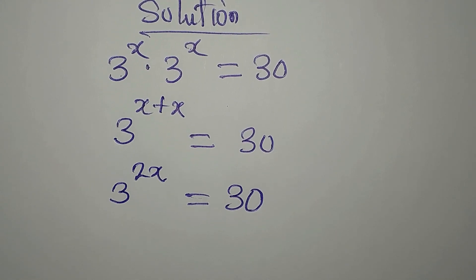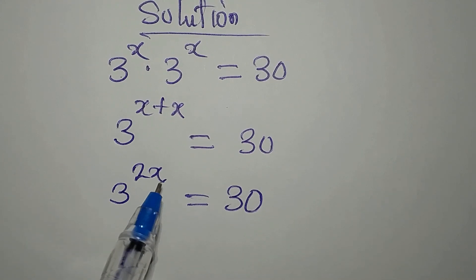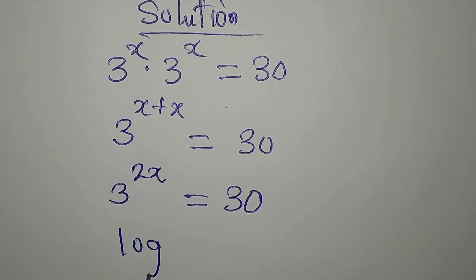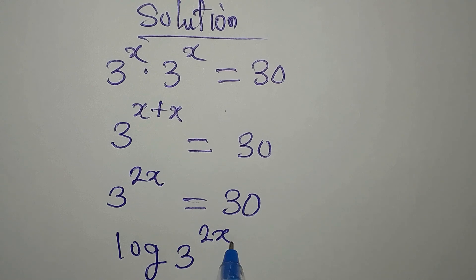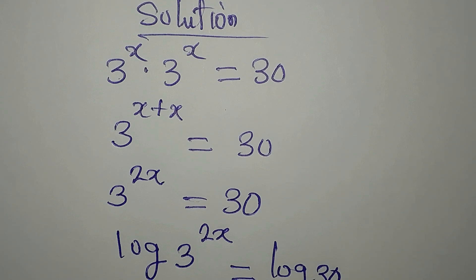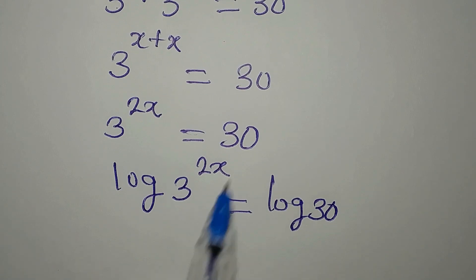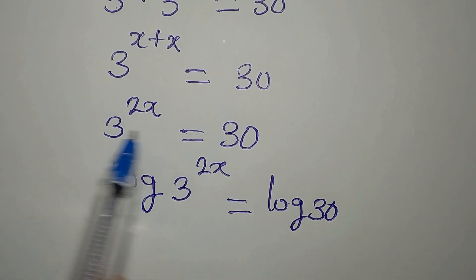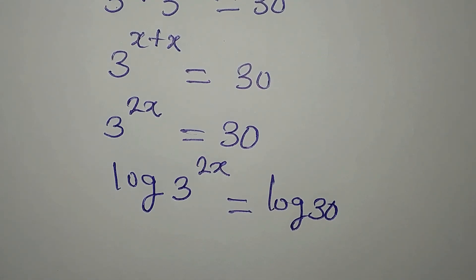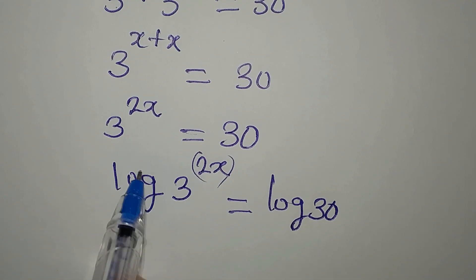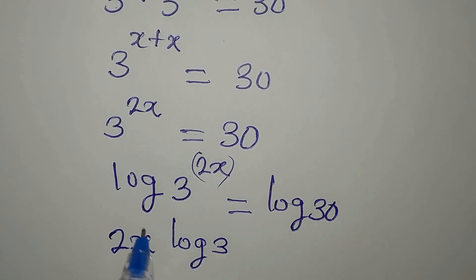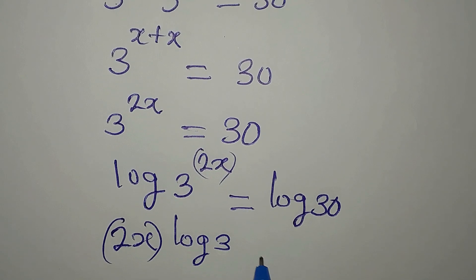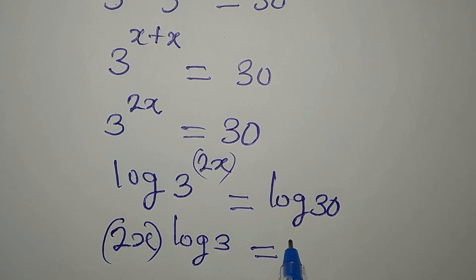Our next target is to get the value of x, and as such we will take the log of both sides. Log of 3 to the power of 2x is equal to log 30. Since you cannot express 30 in that form, you take the log of both sides. The power always comes down to multiply the log, so 2x multiplied by log 3 equals log 30.